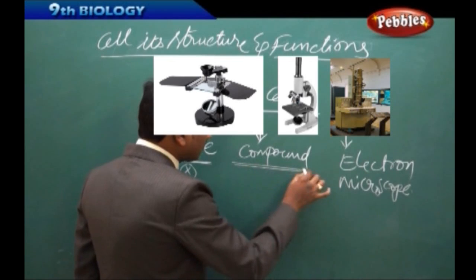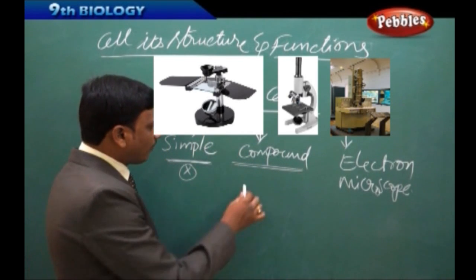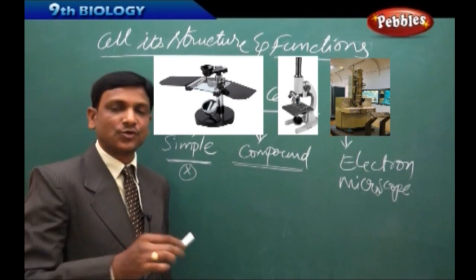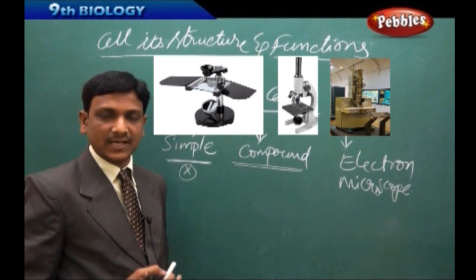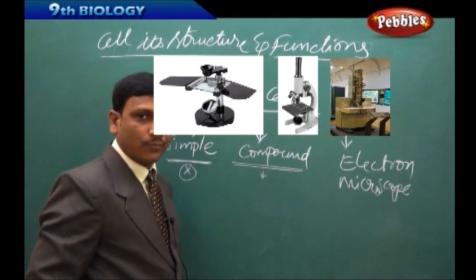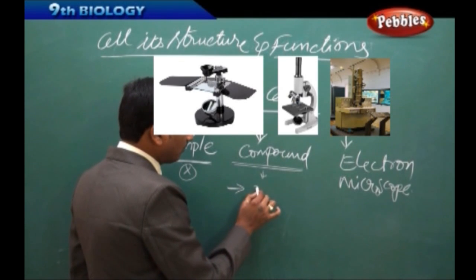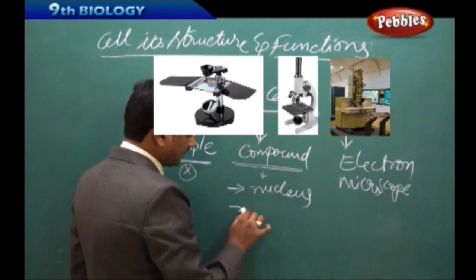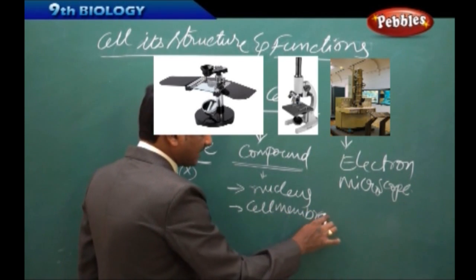We can use a compound microscope to study the cells. So compound microscope is used to observe the cell and its organelles like nucleus and we can see the cell wall or cell membrane. So these kind of things can be observed in a compound microscope. So by using a compound microscope, we can observe the nucleus, cell membrane, etc.